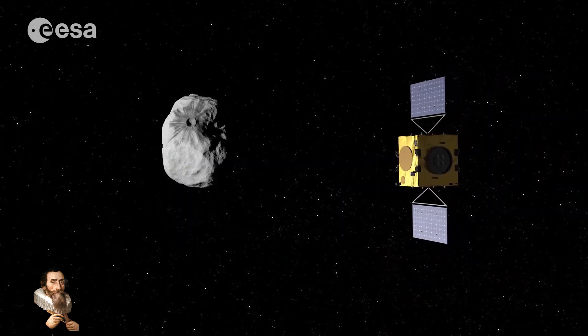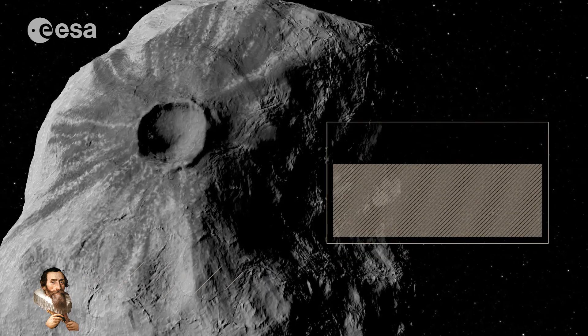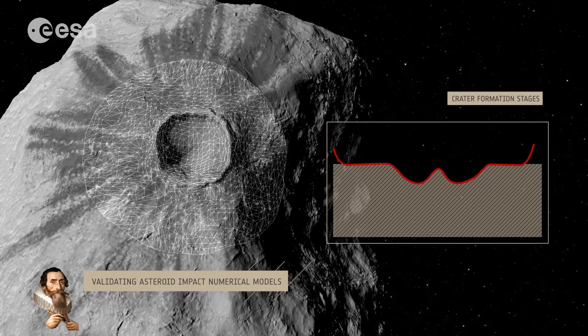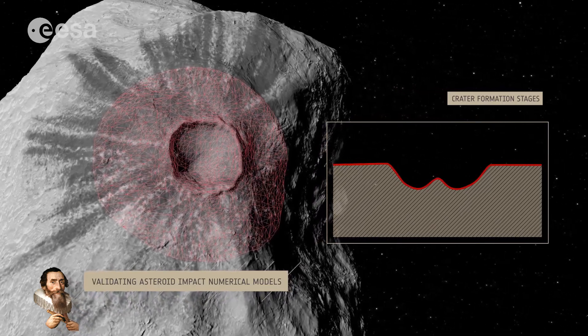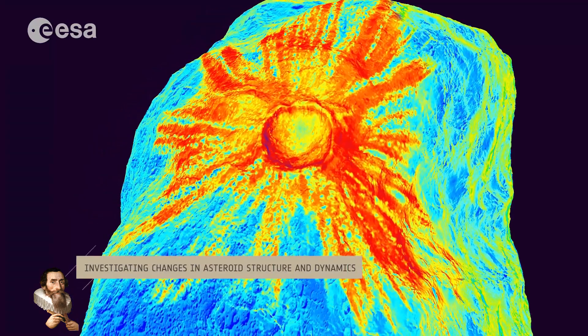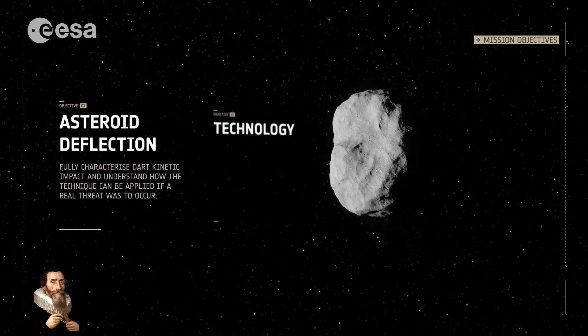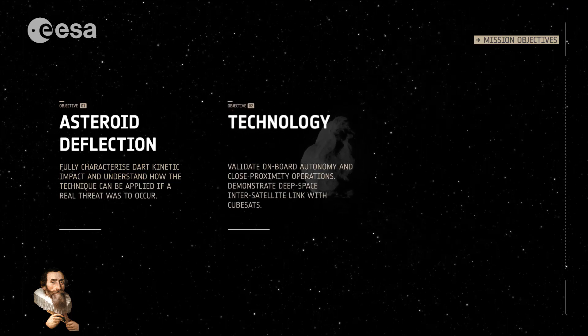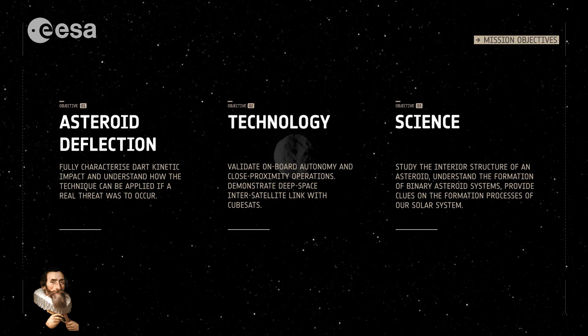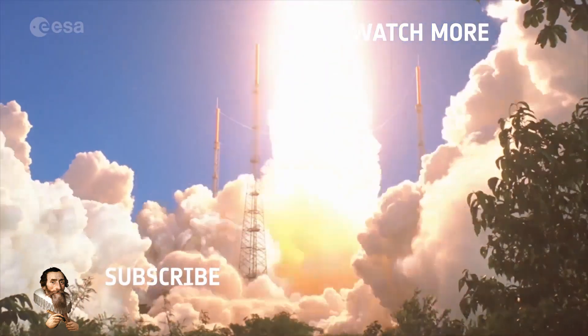The HERA mission represents a significant step forward in planetary defense and our understanding of asteroid deflection techniques. By studying the aftermath of the DART impact on Dimorphos, HERA will provide valuable data to refine our methods for protecting Earth from potential asteroid impacts. The close approach of asteroid Apophis in 2029 will offer a unique opportunity to study a near-Earth object up close, enhancing our ability to predict and mitigate future threats. Together, these efforts underscore the importance of international collaboration in safeguarding our planet from cosmic hazards.